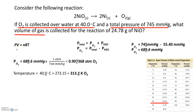Now I have pressure and temperature, but I also need the moles of oxygen gas to solve for volume using PV = nRT. That's where stoichiometry comes in — they gave us the grams of the reactant producing oxygen. Using the balanced chemical equation, we convert the given grams of nickel(II) oxide to moles, and then apply the 2-to-1 mole ratio from the balanced equation to find moles of oxygen gas.